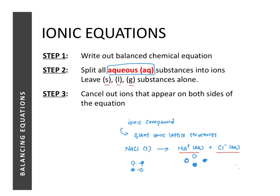We can split sodium chloride into its respective aqueous ions. For all other substances that are solid, liquid, or gas, we leave them alone — we do not split them. Once we have split the aqueous substances into ions, we look out for ions that appear on both sides of the equation and cancel them away.